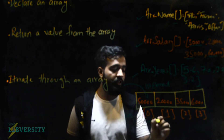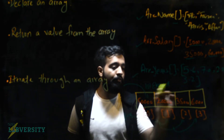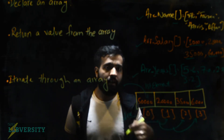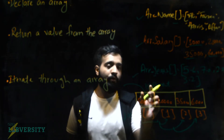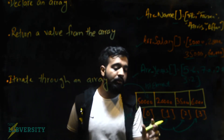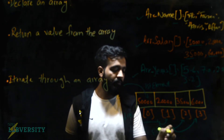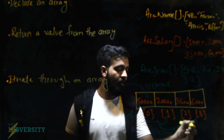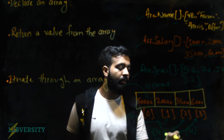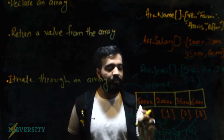So this is the 0th index, this is the first index, this is the second index, and this is the third index. We have four elements and four indexes. While counting elements we start from 1, but for indexes we start from 0. So if we have n elements — that is 4 — we have n minus 1 indexes, meaning 4 minus 1 equals 3 indexes: 0, 1, 2, 3.